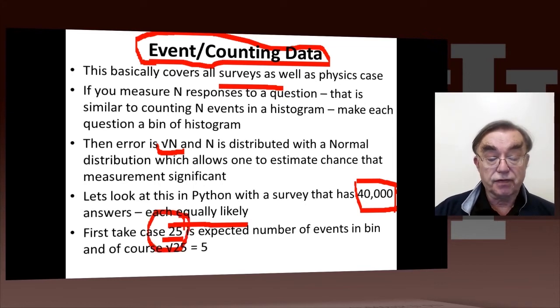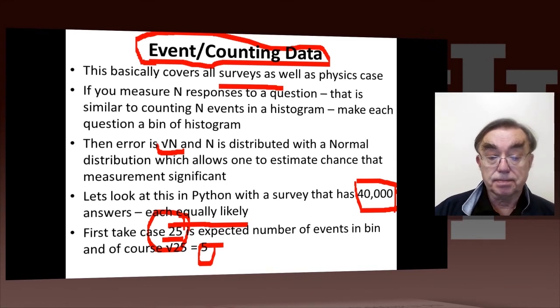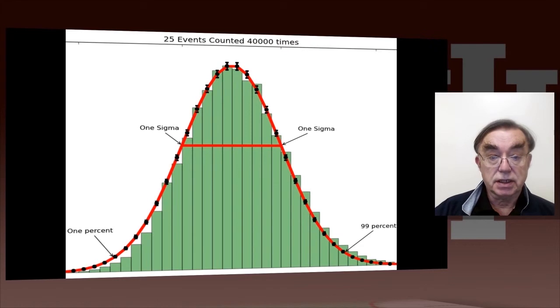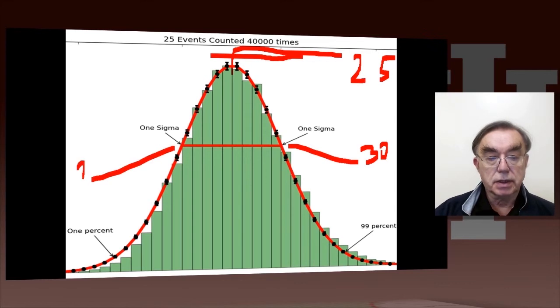The error in 25 is 5, square root of 25. So what we're going to plot is all possible answers, 40,000 of them, and just plot the number of times that question was answered positively. This gives you a histogram. That's shown here for 25 events counted 40,000 times. Here is 25. This thing is so-called one-sigma error, so it's 30. And this is one-sigma error the other side, that's 20.